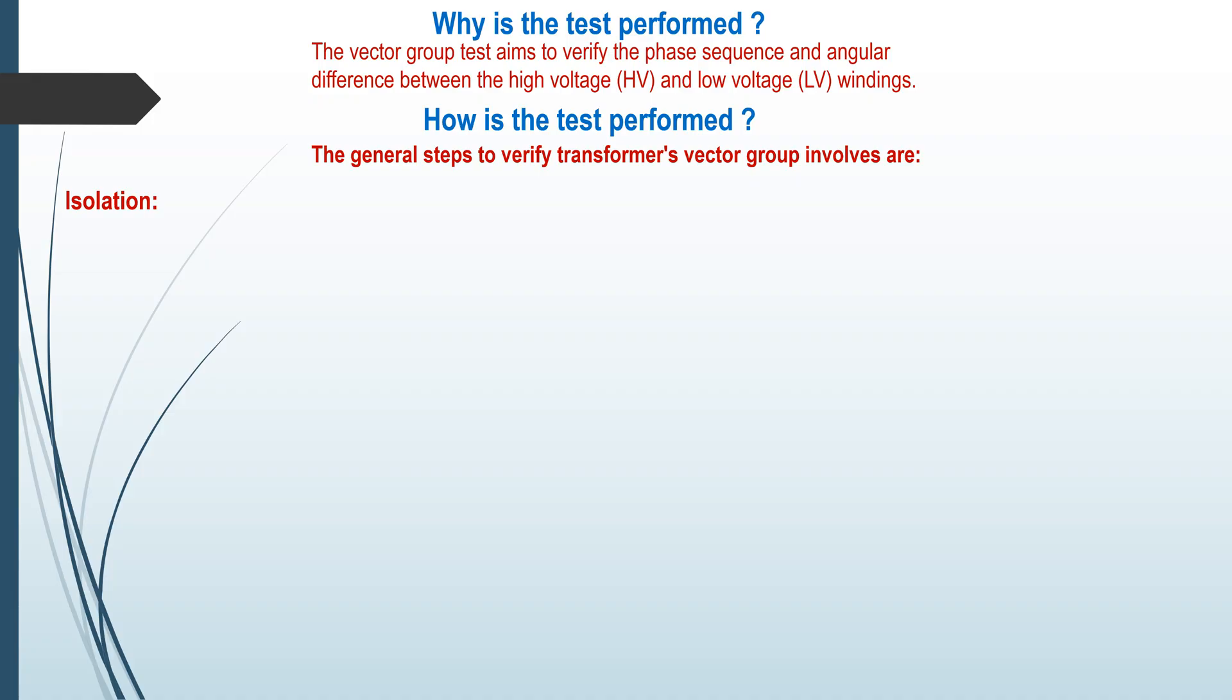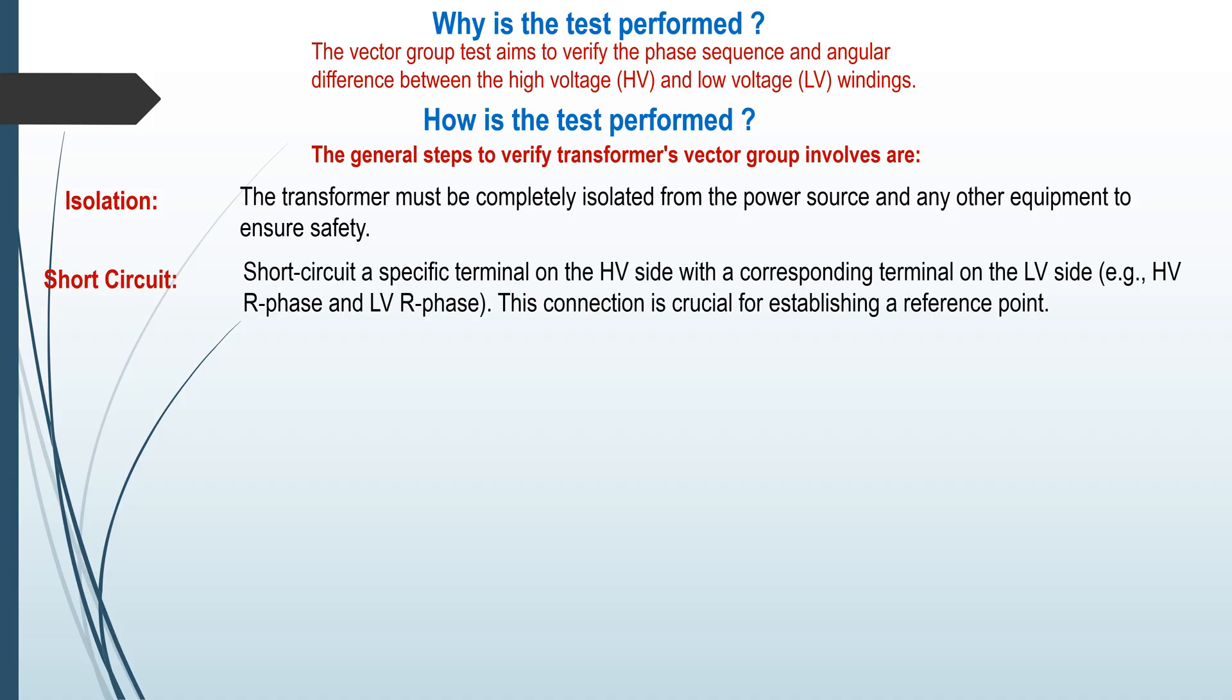Isolation: The transformer must be completely isolated from the power source and any other equipment to ensure safety. Short circuit: Short circuit a specific terminal on the HV side with a corresponding terminal on the LV side, for example, HV R phase and LV R phase. This connection is crucial for establishing a reference point.